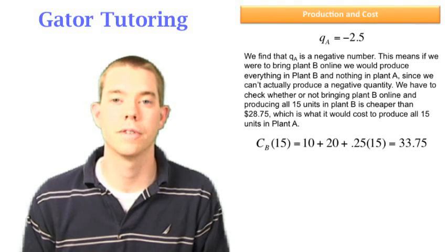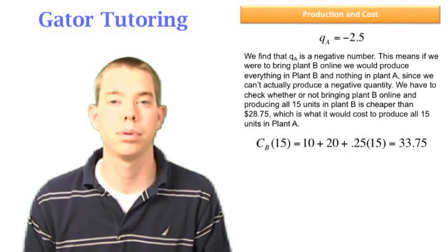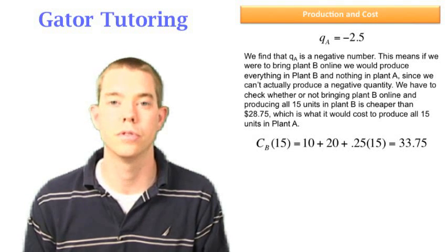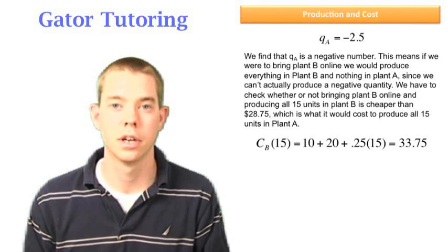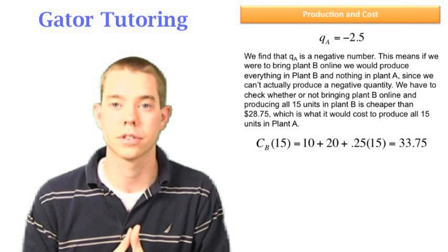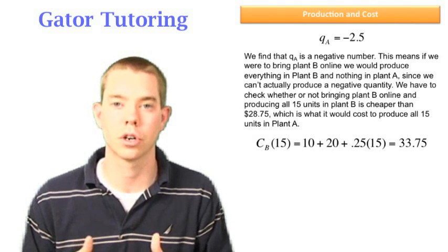We say the cost of 15 units for plant B, and now pay attention here: CB(15) = 10 + 20 + 0.25(15). We've added that $10 fixed cost that we added in plant A's cost function.